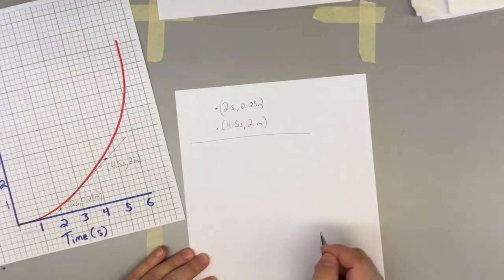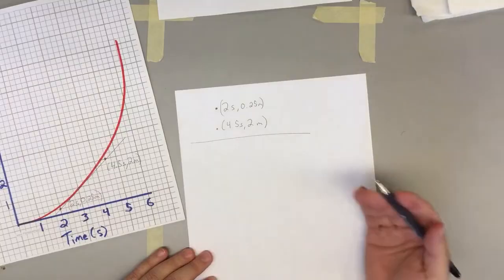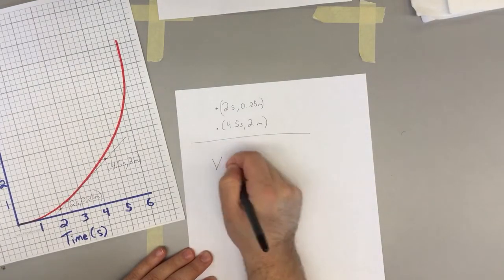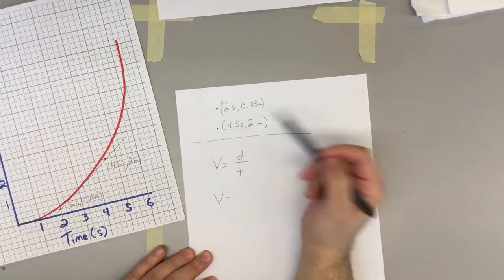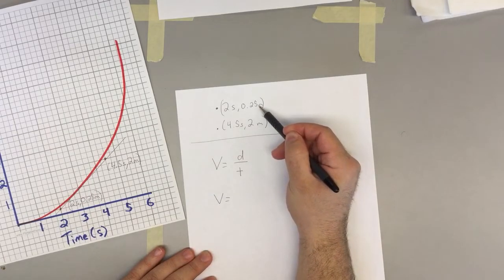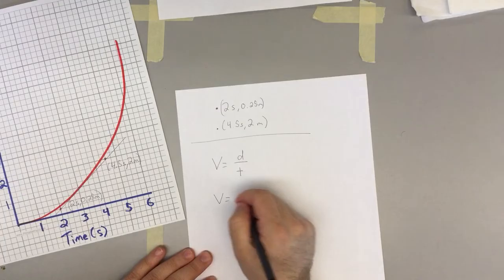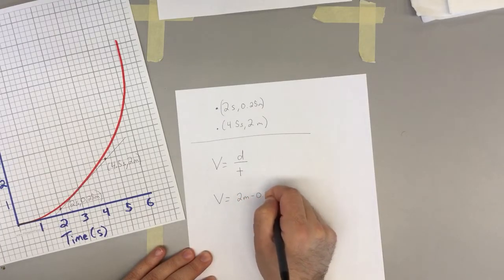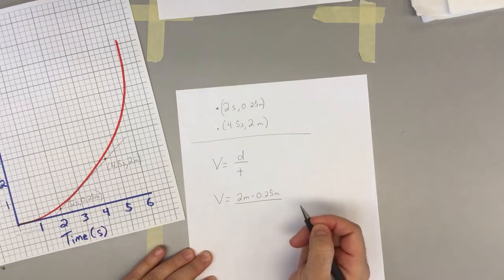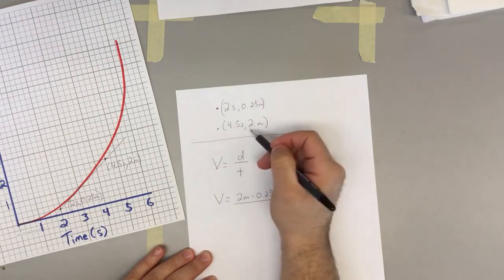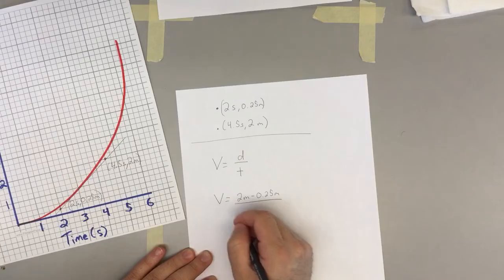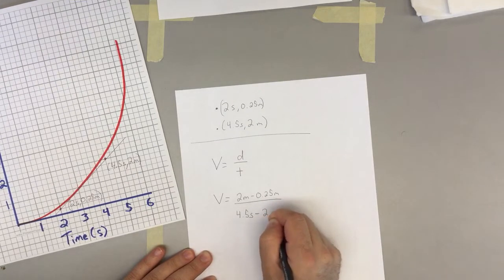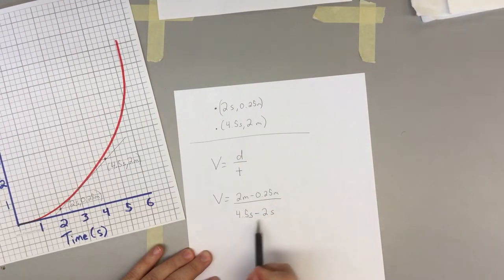So if we know velocity equals distance over time. If we started at 0.25 meters and we went two meters, then we do two meters subtract 0.25 meters to figure out how far they traveled. And then we've got to figure out how much time passed. So if we ended at 4.5 seconds and we started at two seconds, we can calculate how much time passed.